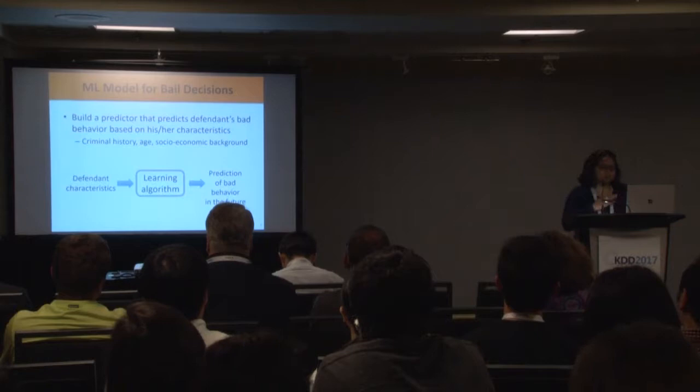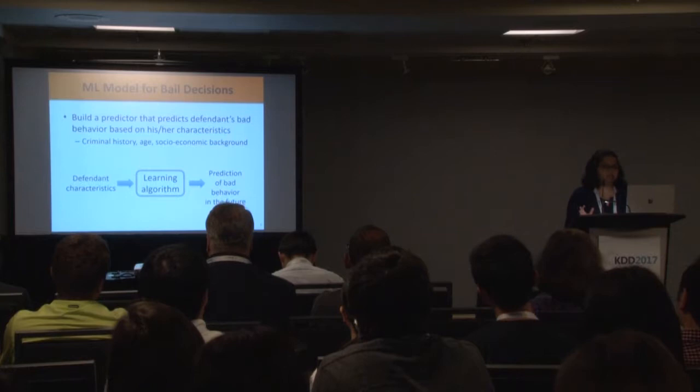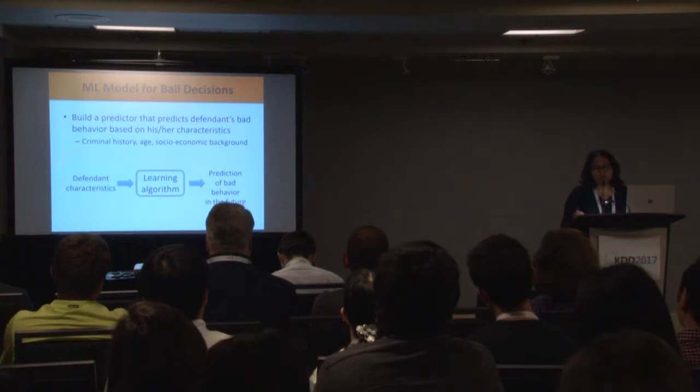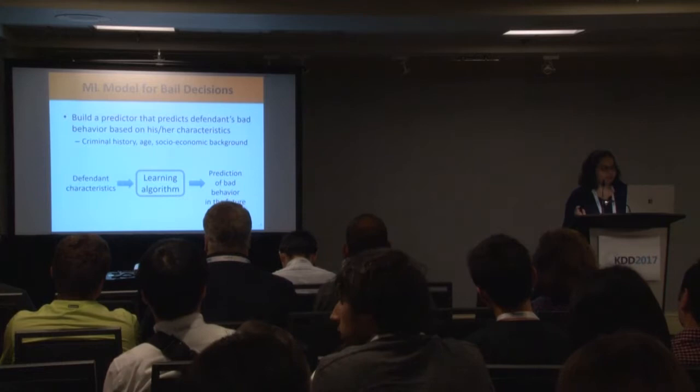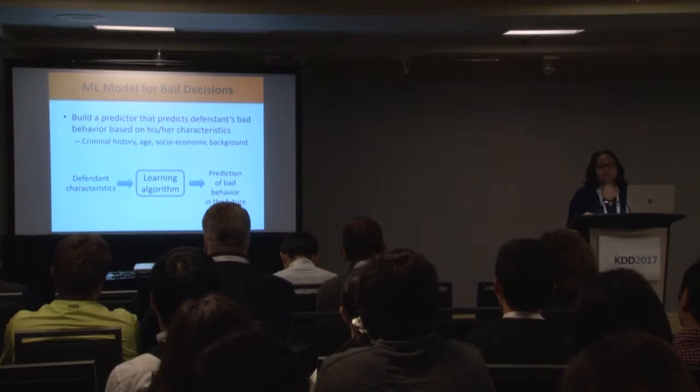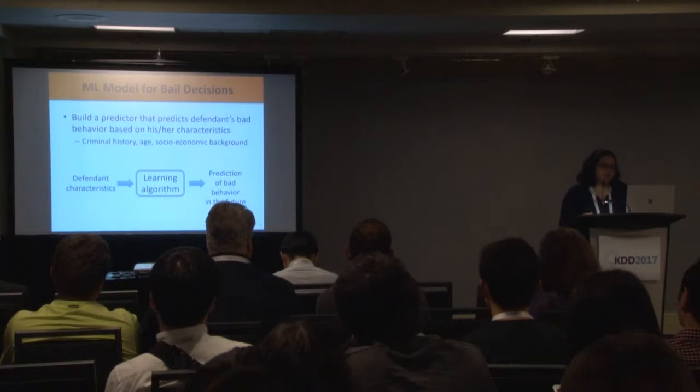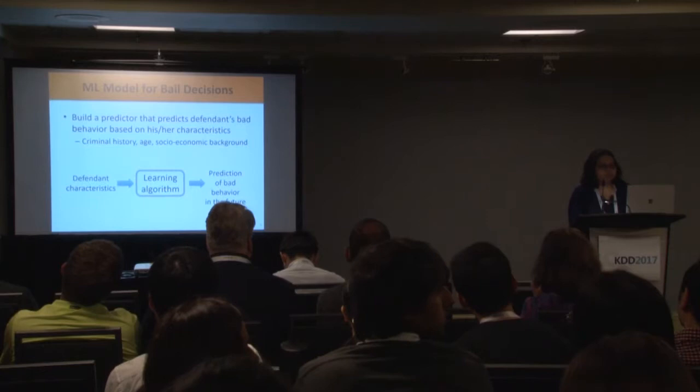Coming to the algorithmic part, this seems simple enough at first look. Why can't we just train a model which takes defendant characteristics like their age, criminal history, and socioeconomic background, and predict if someone will commit a crime in the future, then use those predictions to decide who to jail or release? While this might look trivial at first, there are challenges that make it much trickier.